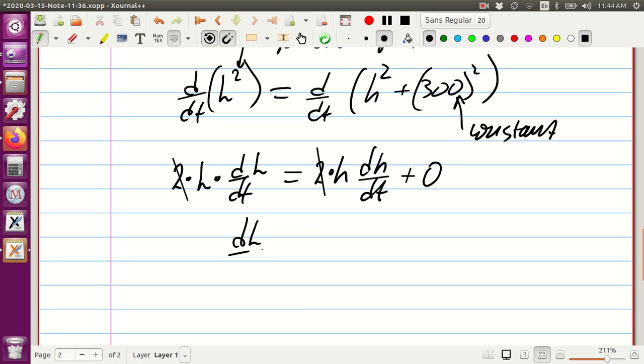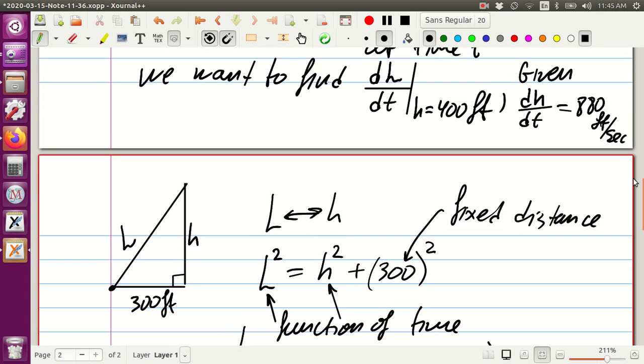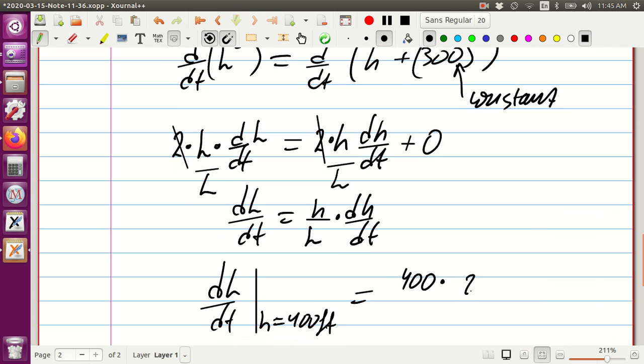So we can divide both sides by two, and we can solve for dL/dt by dividing both sides by L. We have h over L times dh/dt. Let's see what we know in this expression if we plug in h to be equal to 400. If we plug in h equal to 400, we're going to get 400 times dh/dt, and we know dh/dt was 880 feet per second. This h is in feet.